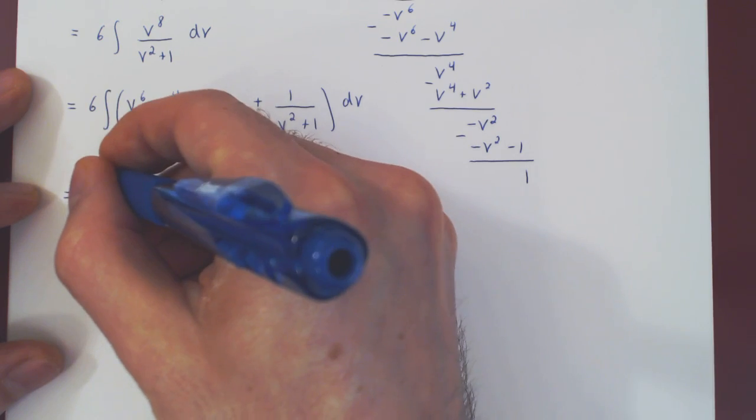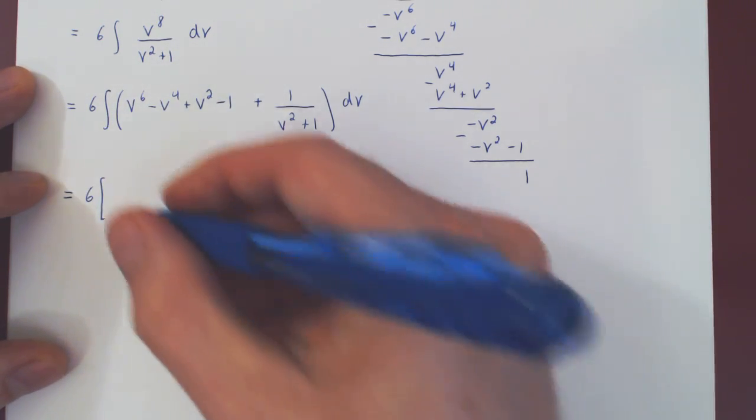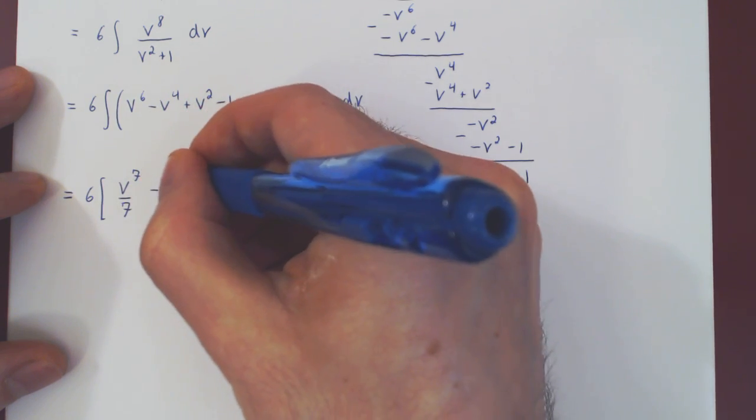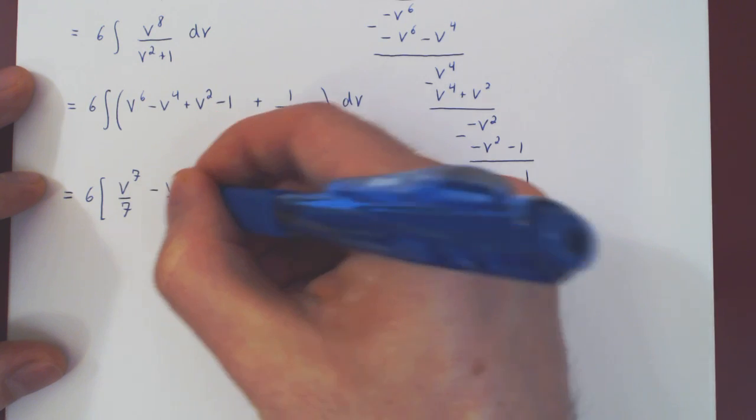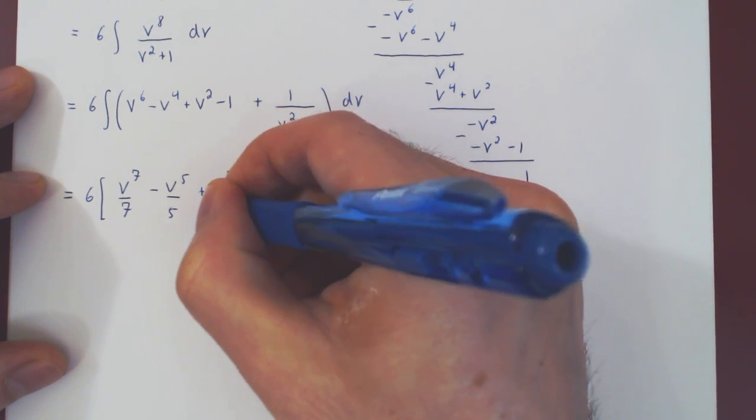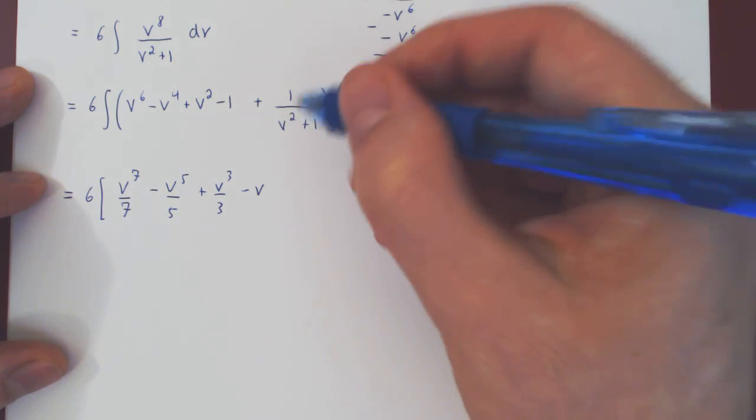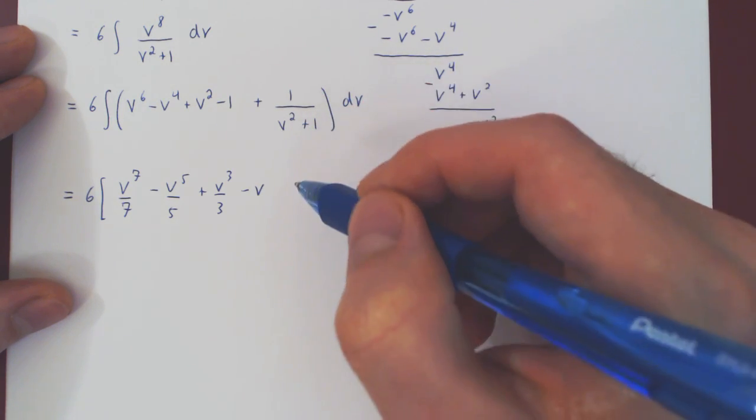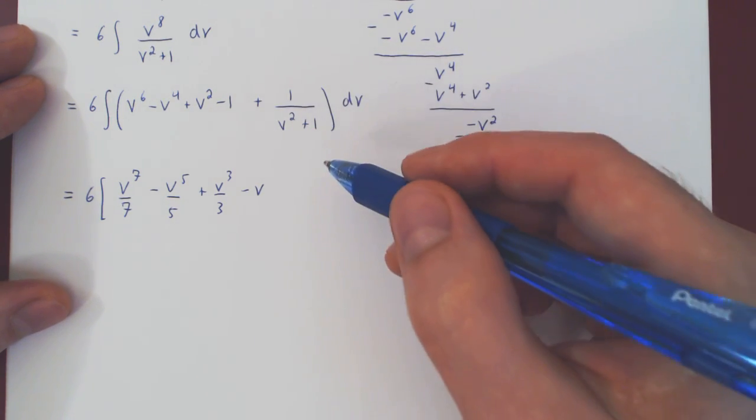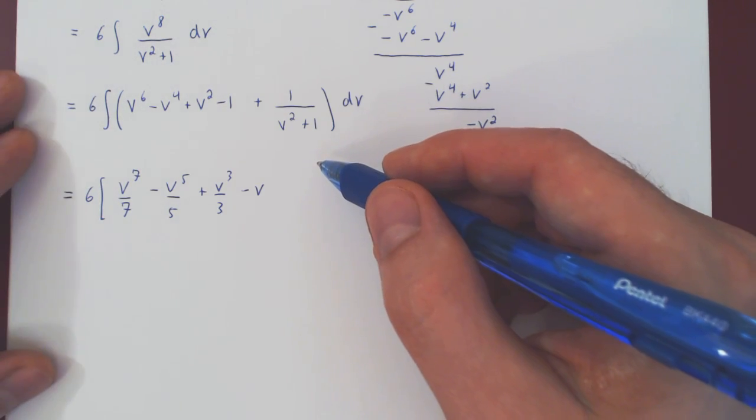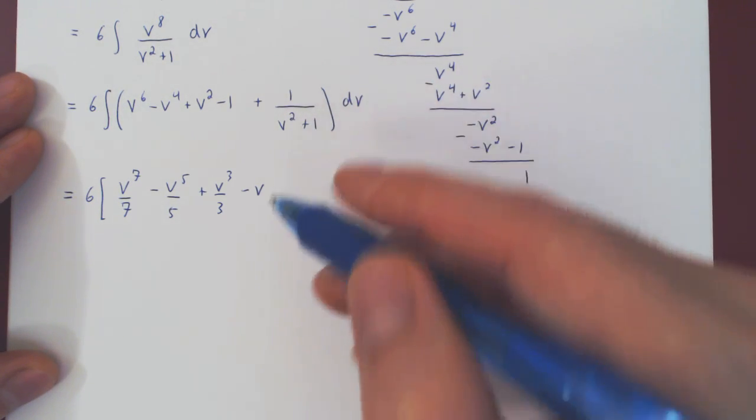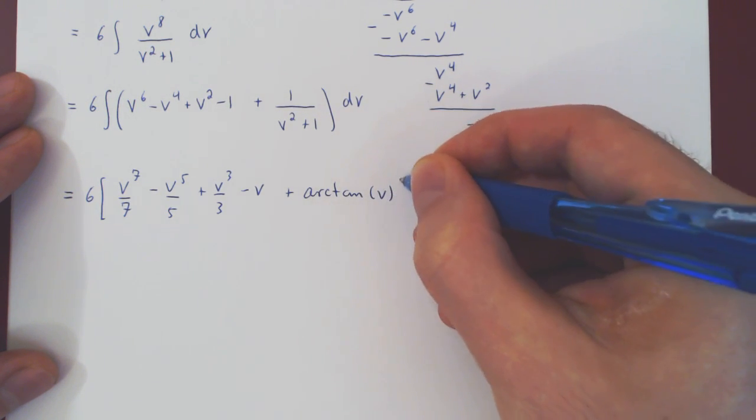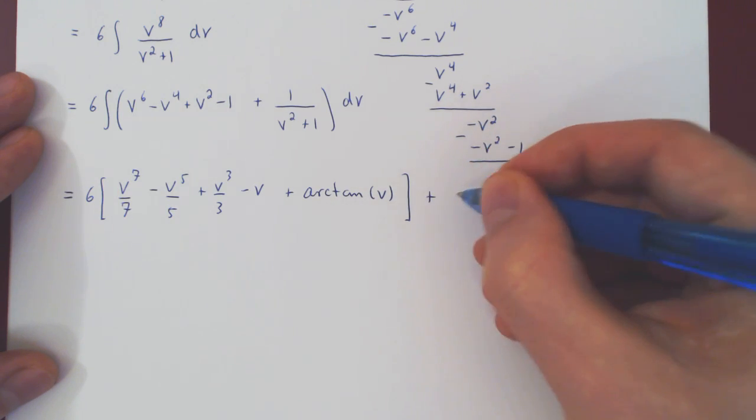With respect to v, and this is now a very straightforward integral. Leaving 6 up front as a scalar multiple, power rule on the first four terms. And here you should recognize that the integral of 1 over v squared plus 1 is simply the arctan of v, as the derivative of arctan of v with respect to v is of course 1 over v squared plus 1, and in the end of course plus c.